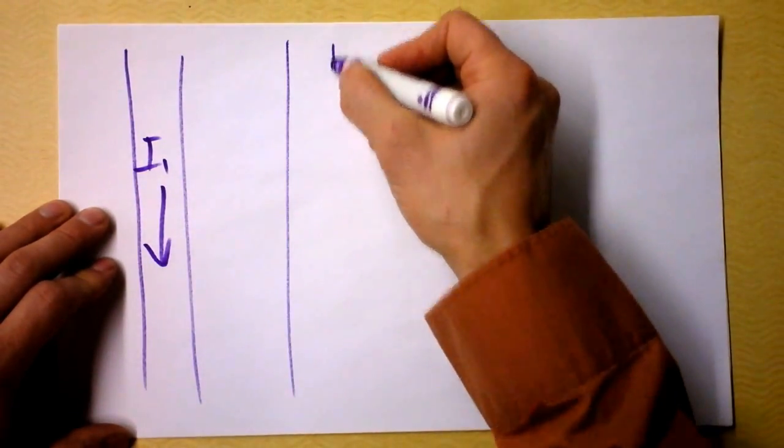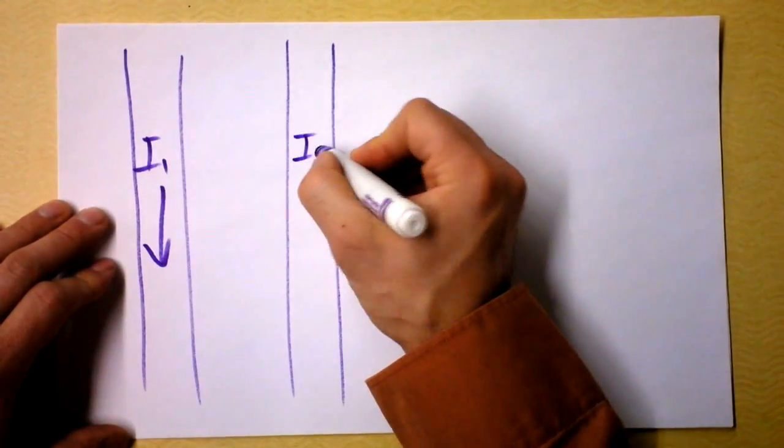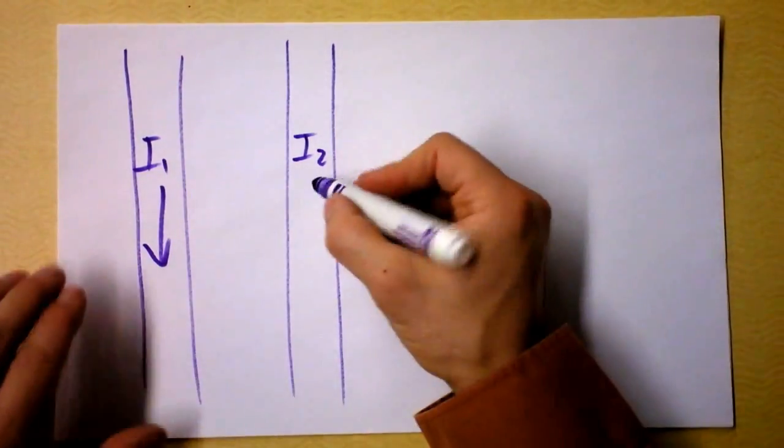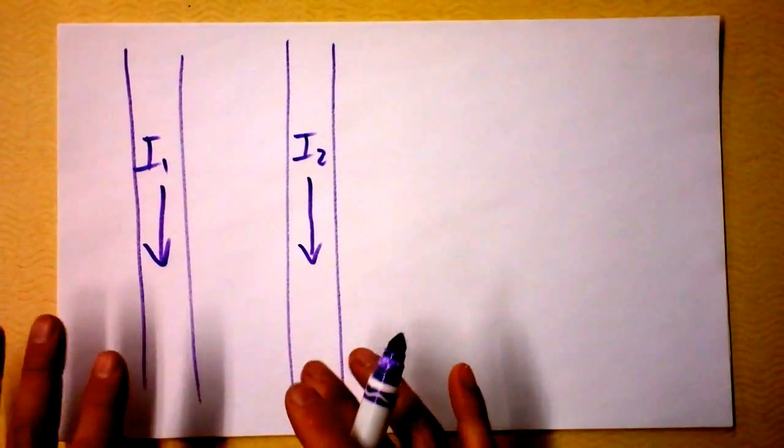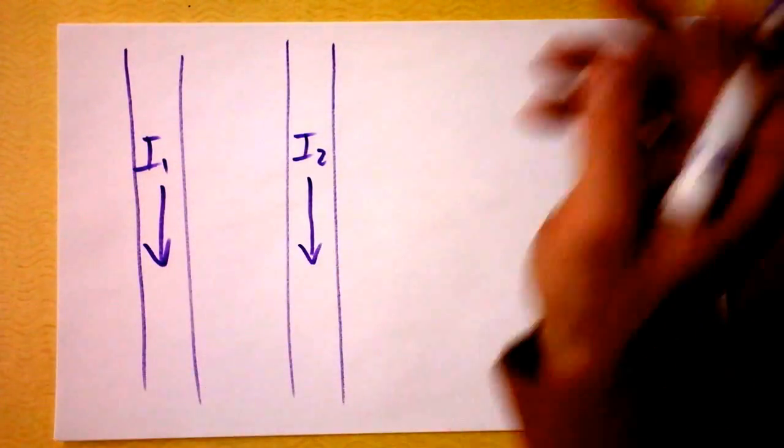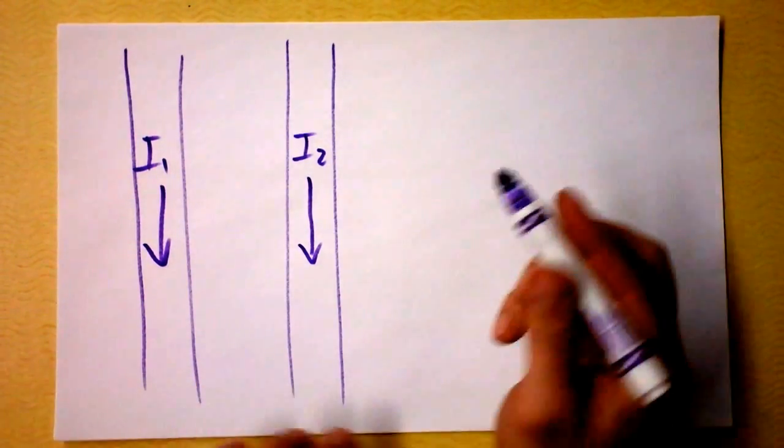I've got I1 here and I've got I2. Do you guys want them to go the same way or different ways? Alright, we'll have them go the same way this time. I've got current 1 and I've got current 2, and I don't really want to think about right now whether they're attracted or repulsed from one another, but I'd like to think about how big the force is.